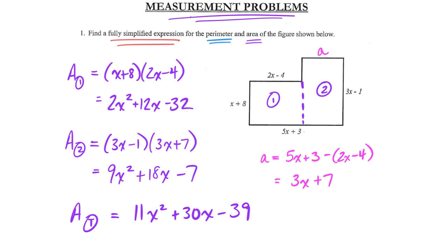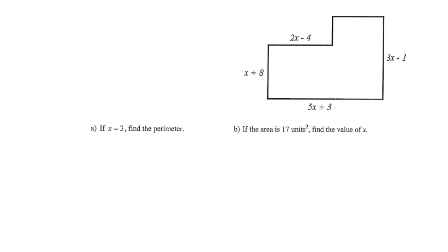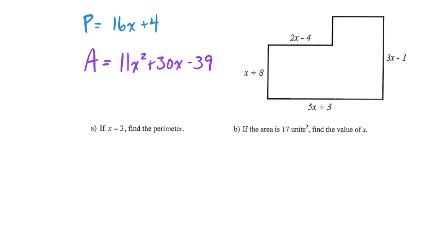Let's jump into the next problem. Here is our shape again with the dimensions. The perimeter was 16x + 4, and the area was 11x² + 30x − 39. Take a moment and try to answer both problems A and B. For problem A, if x = 3, find the perimeter. For problem B, if the area is 17 units squared, find the value of x. Tackle both of those — pause the video now.